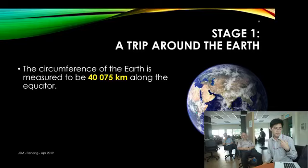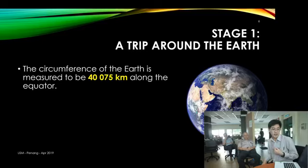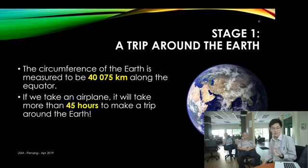You know that the Earth is not exactly spherical. It's slightly fatter in the center, so we're talking about this equator distance. So if we take an airplane with a lot of fuel and you can fly non-stop around the Earth, it will take 45 hours to make a round trip. That means you fly from KL, one whole round, 45 hours you come back. So 45 hours is about two days. So it's less than two days — not a long time. You can physically travel around the Earth one round without much problem.